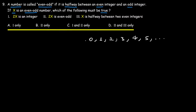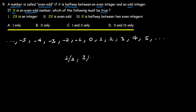Integers do not include fractional values. For example, two and a half, three and a half — these are not integers. Integers do not include fractions. Integers also do not include decimals. For example, 0.5 or 3.4 — these are not integers. Integers do not include decimals.